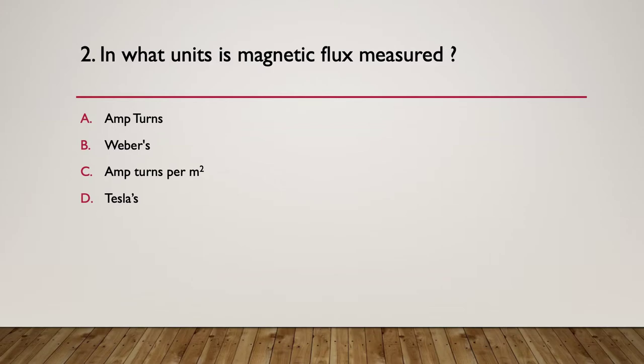Question two. What unit is magnetic flux measured in? So what are the units that we measure our magnetic flux? A. Amp turns. B. Webbers. C. Amp turns per metre squared. Or D. Teslas. Hint. Magnetic flux is about lines of flux over a specific area. And the answer is Webbers. So a Webber is so many lines of flux over so many square metres. All combined into the one thing. Or into the one unit.